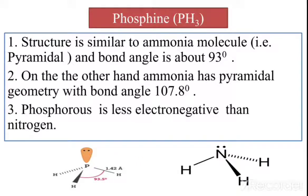On the other hand, ammonia has pyramidal geometry with a bond angle of 107.8 degrees. When you consider the electronegativity of phosphorus and nitrogen, phosphorus is less electronegative than nitrogen.